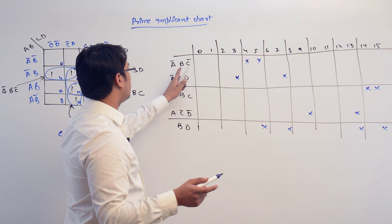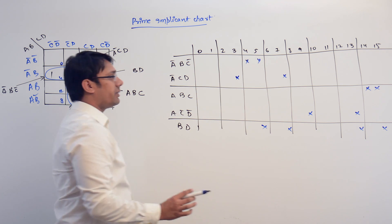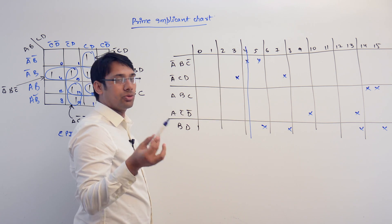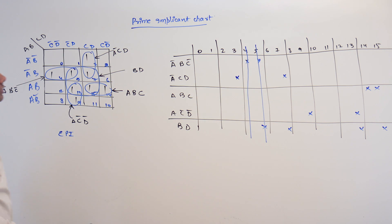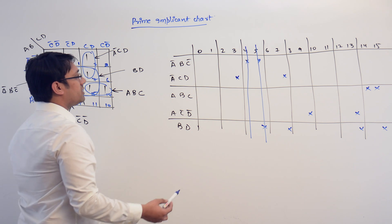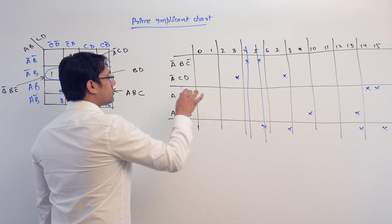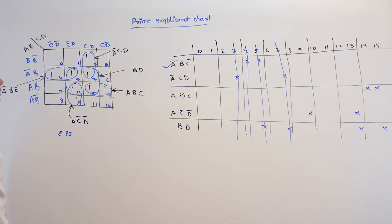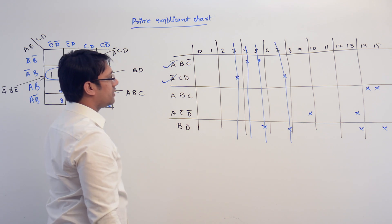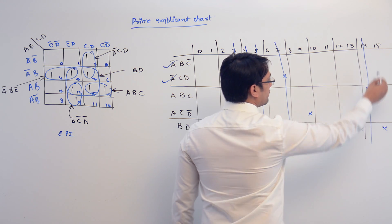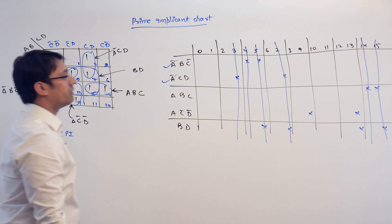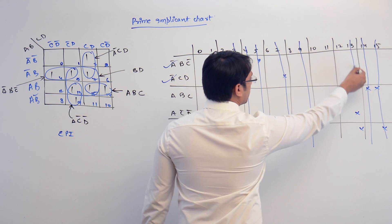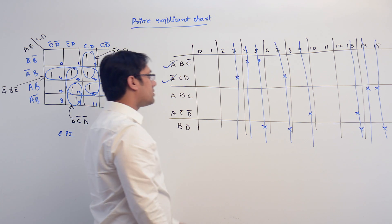The first essential prime implicant is A complement, B, C complement, because it is covering term 4 which is not covered by anything else — it also covers 5. A complement, C, D is also essential because it covers term 3 which is not covered by anything else — it also covers 7. A, B, C is essential because it covers term 14 which is not covered by anything else — it also covers 15. A, C complement, D complement is essential because it covers term 9 which is not covered by anything else — it also covers 13.